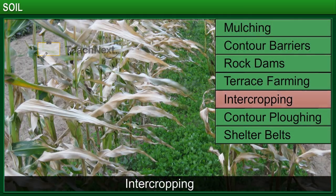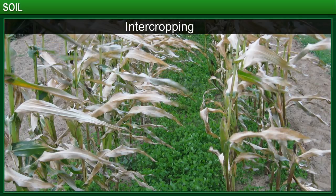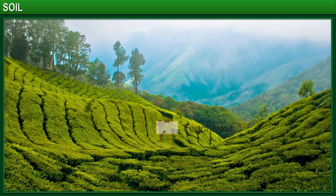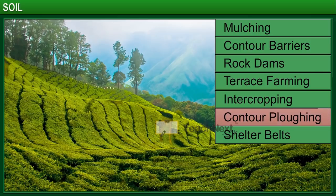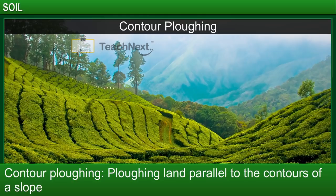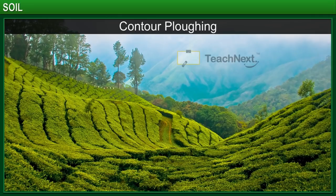Intercropping is a widely used practice in China to reduce soil erosion due to rain wash. In this method, different crops are grown in alternate rows and are sown at different times. Contour ploughing is the method of soil conservation in which the land is ploughed parallel to the contours of a slope. This creates a barrier that prevents water from flowing down the slope. Contour ploughing has been used to prevent soil erosion in the prairie regions in the USA.